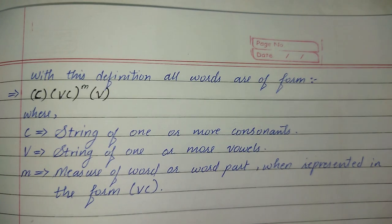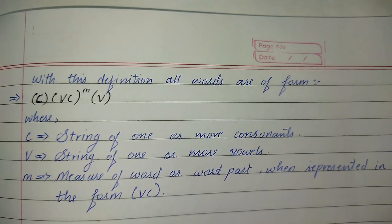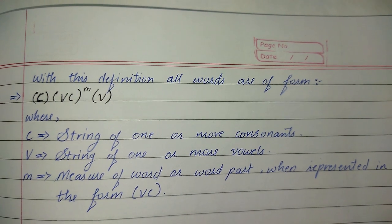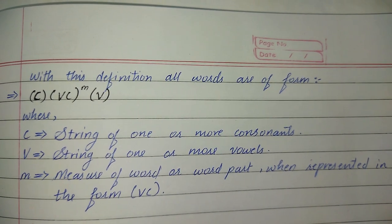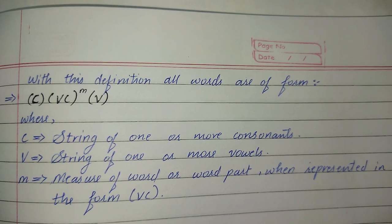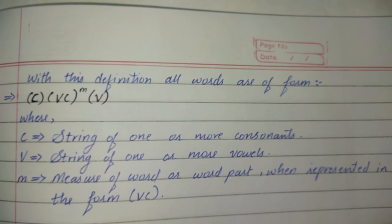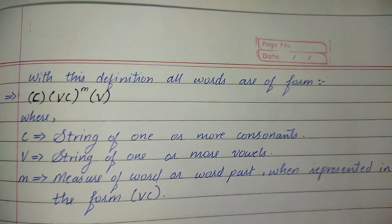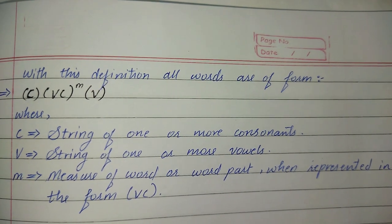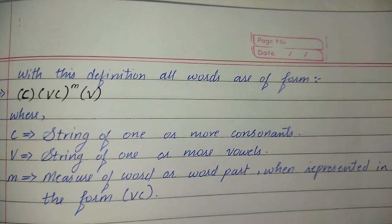With this definition, all words are of the form C, VC raised to m, and V, where C represents a string of one or more consonants, V represents a string of one or more vowels, and m represents the measure of a word or word part when represented in the form VC.